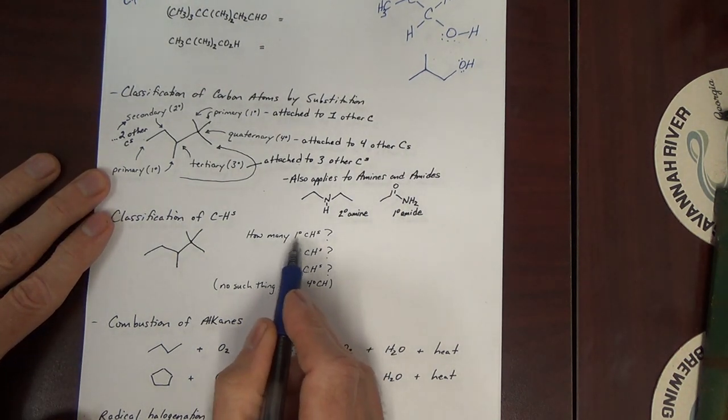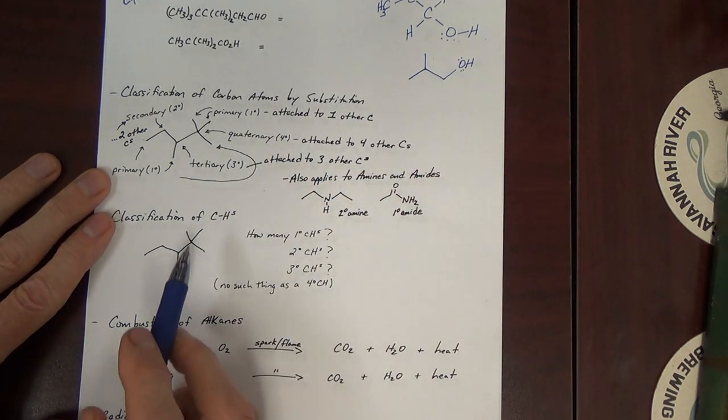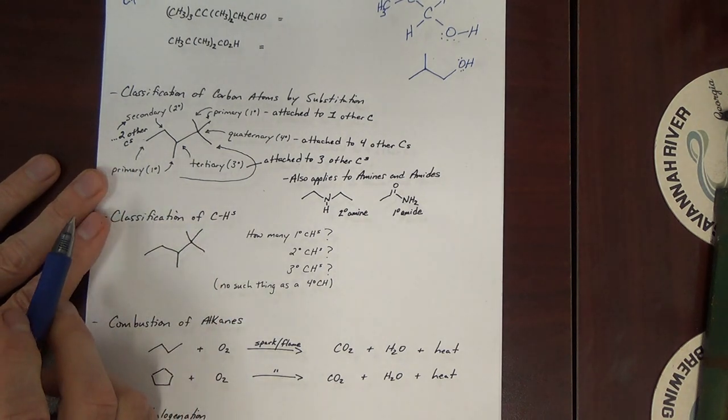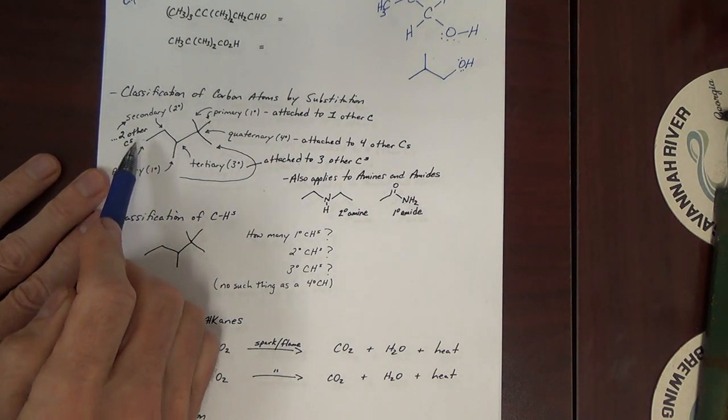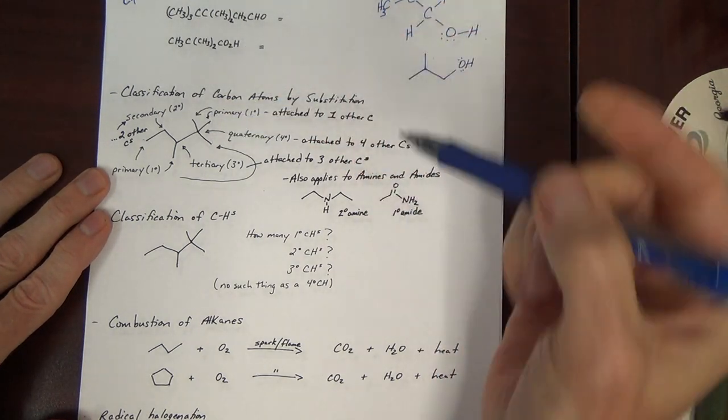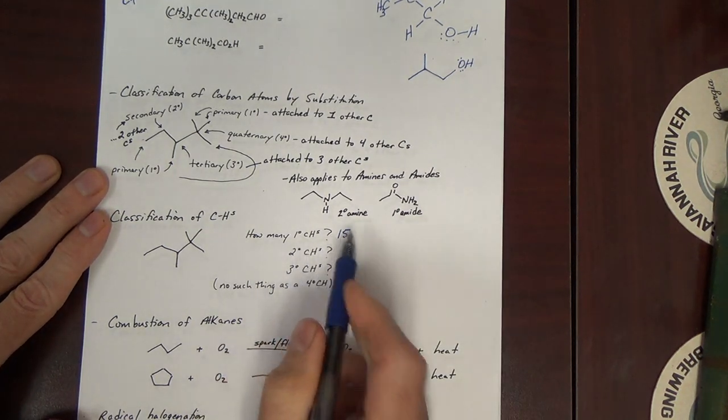Well, we first have to know where are the primary carbons. Those were identified up here. Each primary carbon up here has three H's. So that's three, six, nine, twelve, fifteen. There's fifteen primary C-H's.